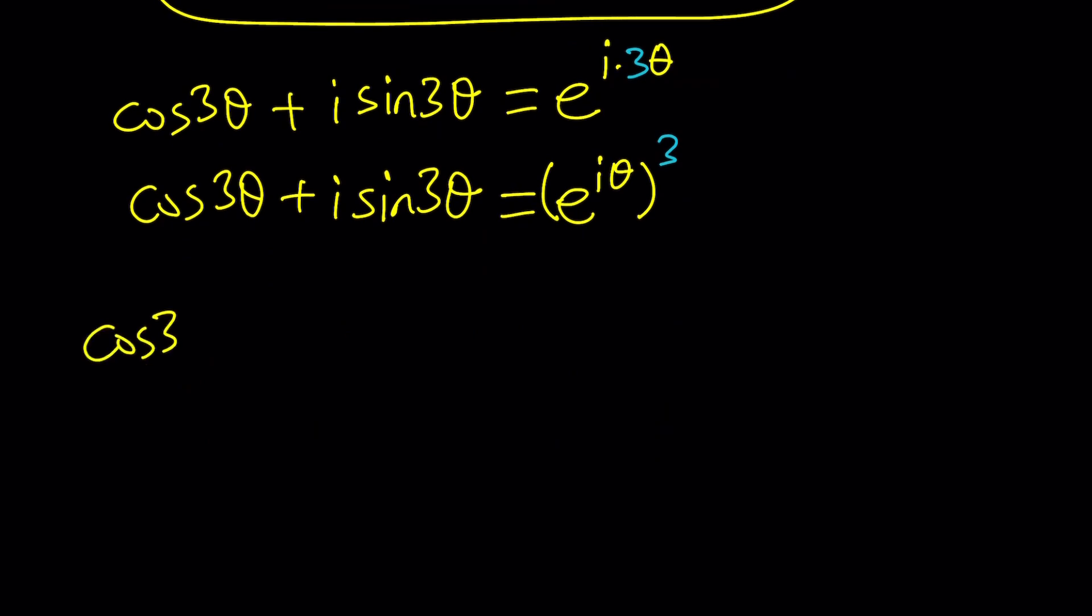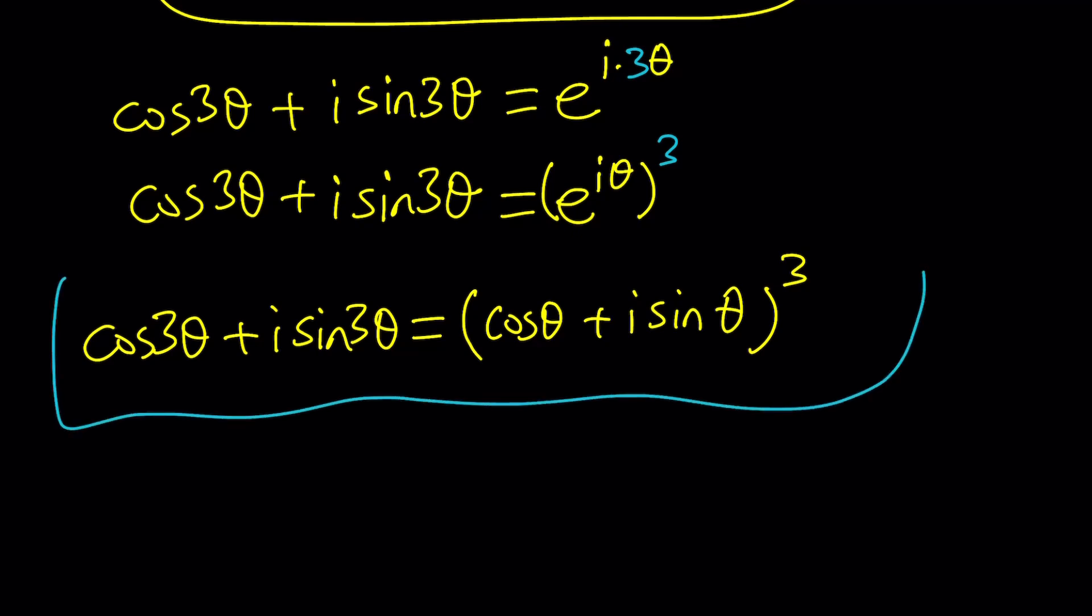Cosine of 3 theta plus I sine 3 theta equals cosine theta plus I sine theta to the third power. Beautiful. And I think this is called the Moivre's formula right? Something like that. I can never say the French pronunciation but that's what it is.